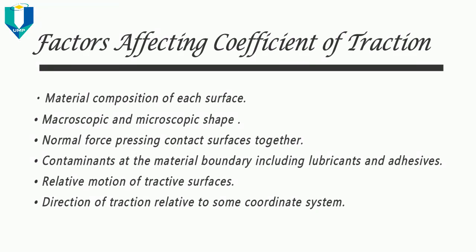Fifth, the relative motion of the tractive surface. For example, a sliding object — one in kinetic friction — has less traction than a non-sliding object, one in static friction. Sixth, the direction of traction relative to some coordinate system. For example, the available traction of a tire often differs between cornering, accelerating, and braking. Seventh, for low friction surfaces such as off-road or ice, traction can be increased by using traction devices that partially penetrate the surface, using the shear strength of the underlying surface rather than relying solely on dry friction.